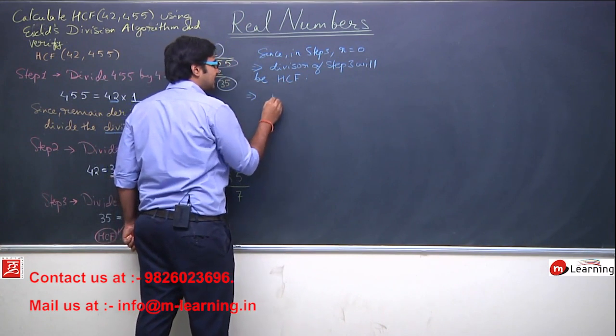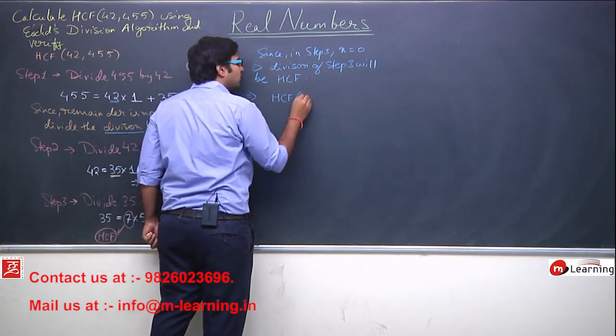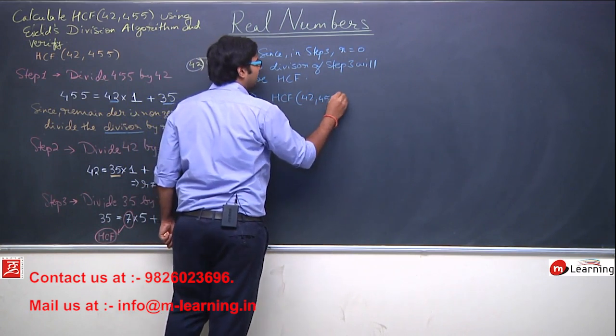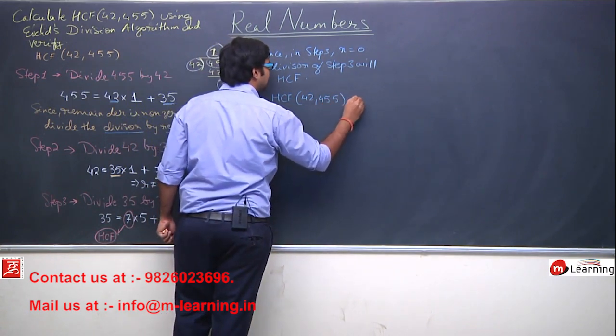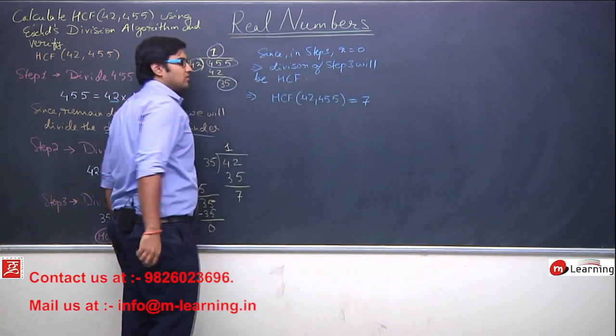So in this case, I will say HCF of 42 and 455 is basically 7.